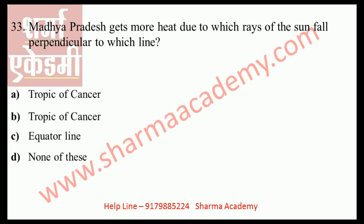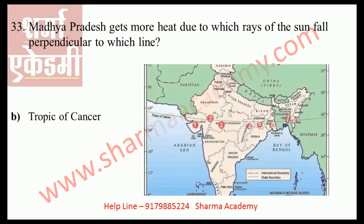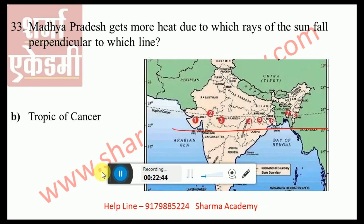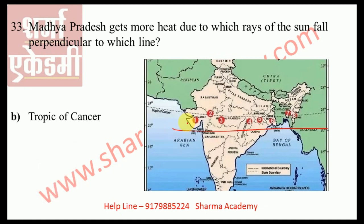Madhya Pradesh gets more heat due to which line the sun's rays fall perpendicular to. The correct answer is the Tropic of Cancer. The Tropic of Cancer passes midway through Madhya Pradesh. In April and May, the sun's rays are directly over the Tropic of Cancer, so in May the state receives maximum heat and there is a rise in temperature in northern Madhya Pradesh. The Tropic of Cancer has great influence on the climate of the state.